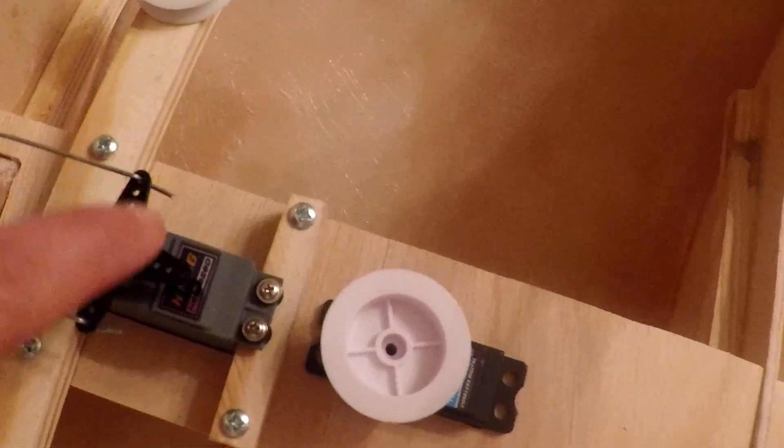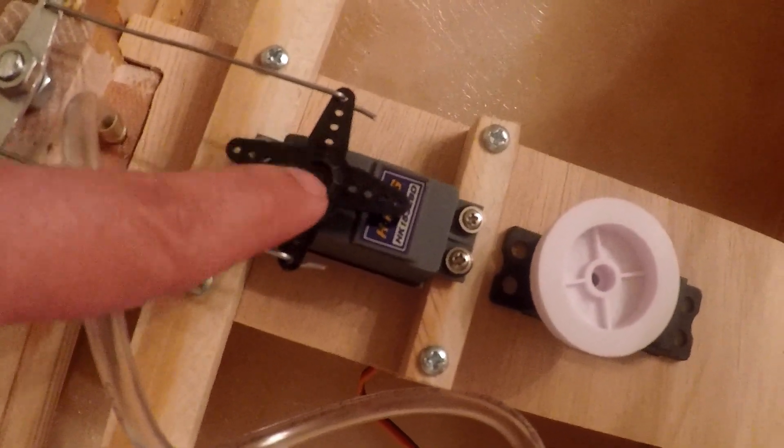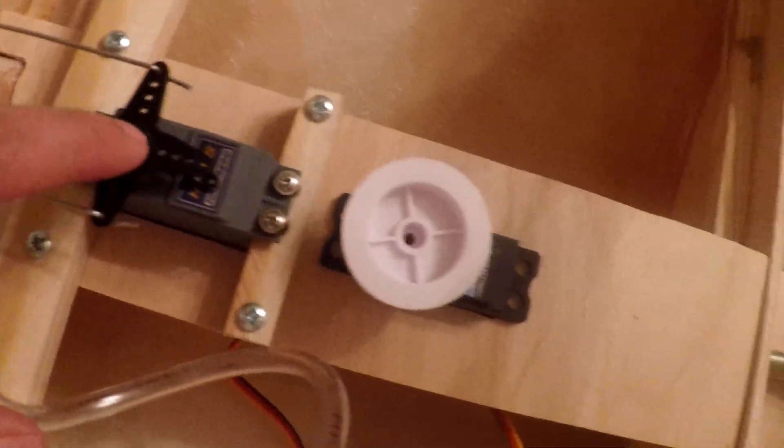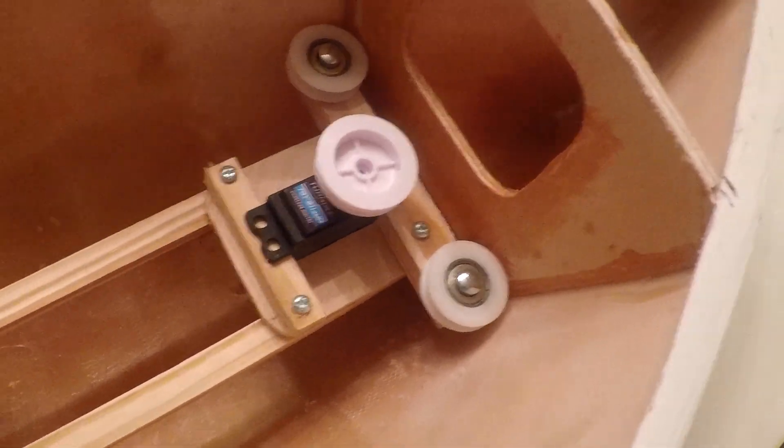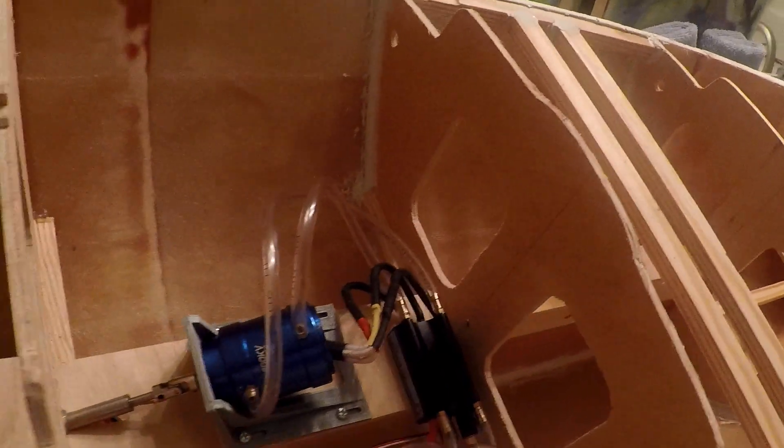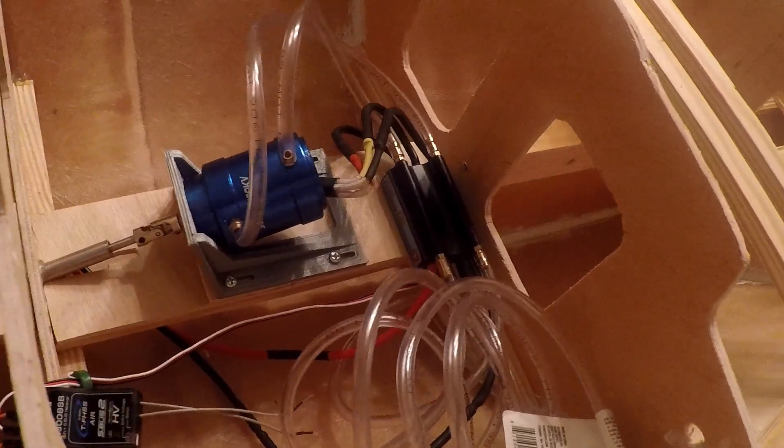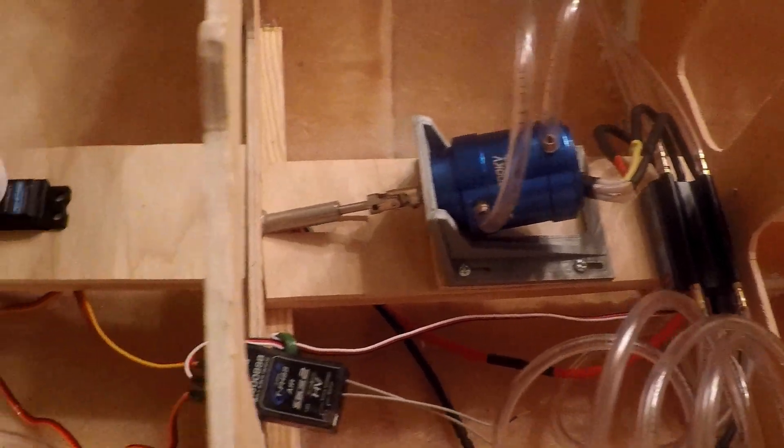You can also see here the servo for the rudder. And this is one of the control sail servos and this is the other one. For the next video I will share the detail of this test. See you on the next one.